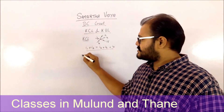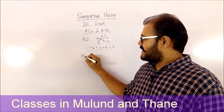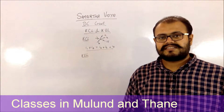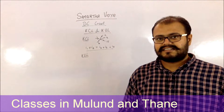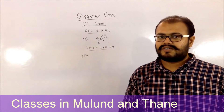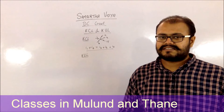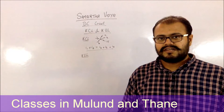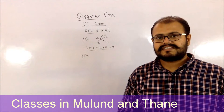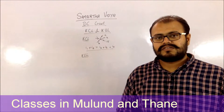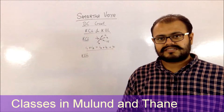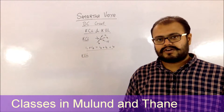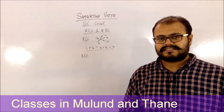Moving to KVL: Kirchhoff's voltage law states that all the voltages present in a particular loop will sum to zero. Those voltages can be due to voltage sources or due to the voltage drop across a resistor.